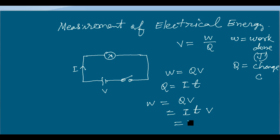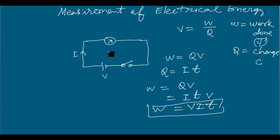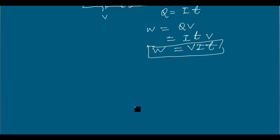Substituting, we get W equals V times I times T. This equation gives the energy consumed by the bulb in terms of electrical parameters — voltage, current, and time. If this bulb draws I amperes for T seconds under a potential difference of V volts, then the energy consumed is W equals V I T.